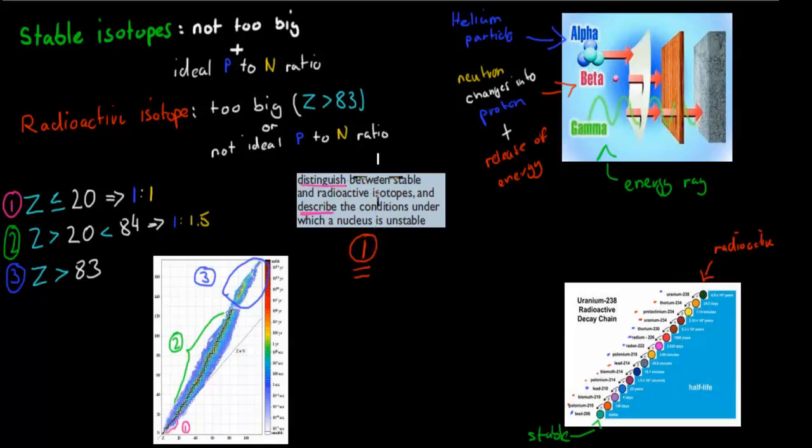The first one is distinguish between stable and radioactive isotopes and describe the conditions under which the nucleus is stable. That's video number one. So we have to be able to distinguish between stable and radioactive isotopes. A stable radioisotope was one that was not too big and it had an ideal proton-to-neutron ratio. A radioactive isotope was either too big, so it had an atomic number greater than 83, or it had a non-ideal proton-to-neutron ratio, or both.